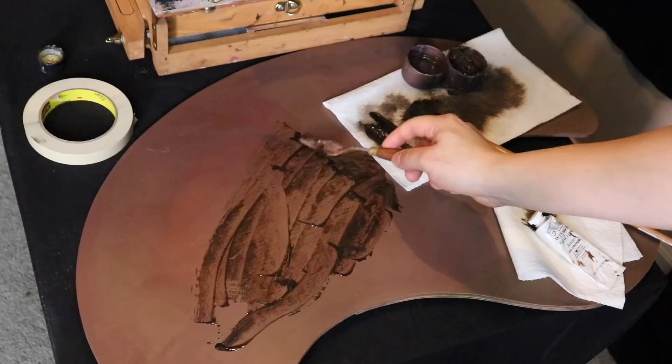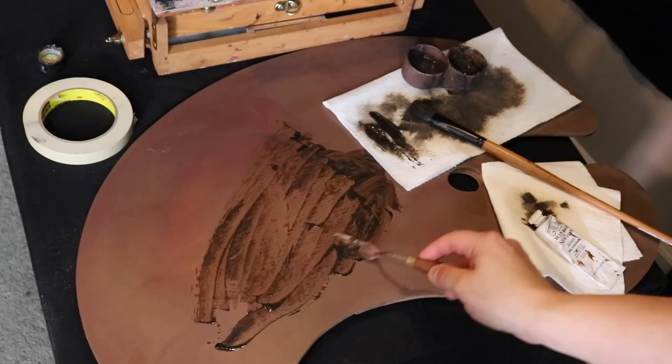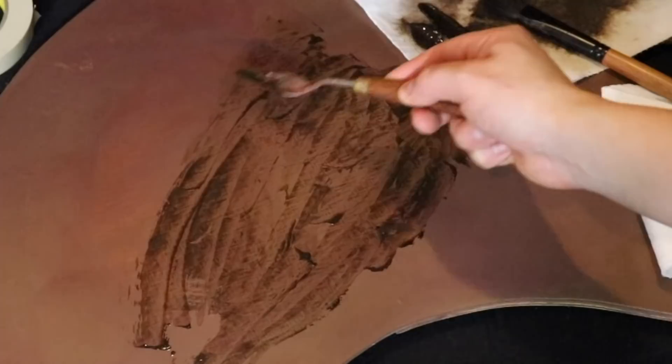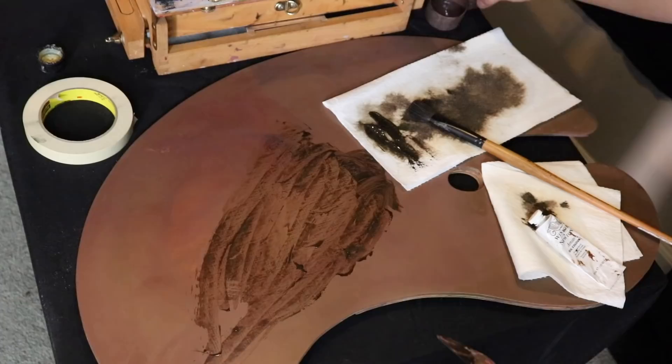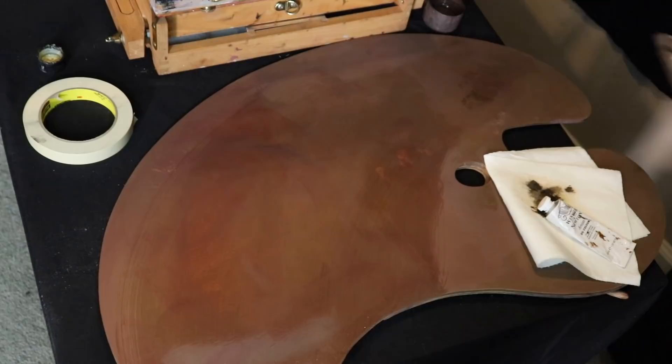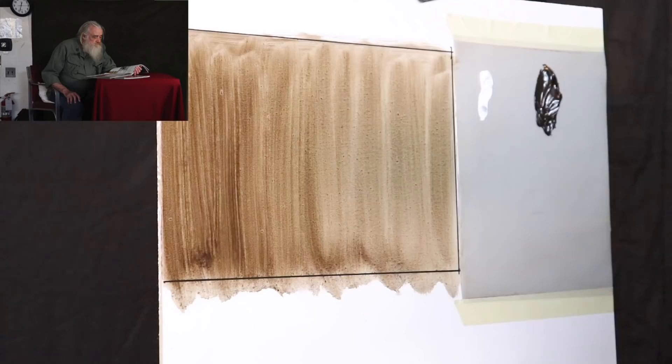And before we get started on that let's make sure to clean off the palette. In case anyone's curious about how you clean a wooden painter's palette, that's how you do it. Just a little bit of scraping with the palette knife, odorless mineral spirits, and that's it.